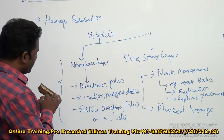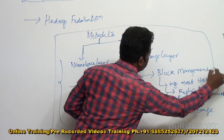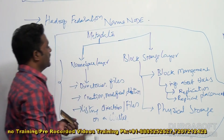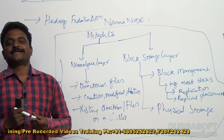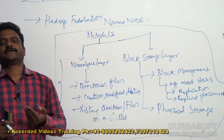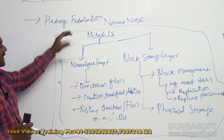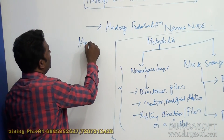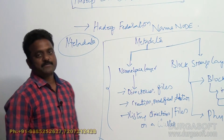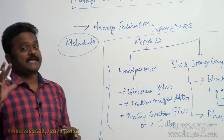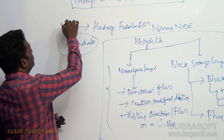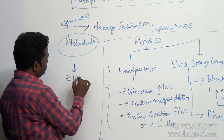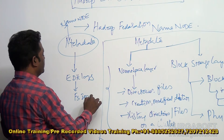This is all inside the metadata of a namenode, covering the 1x version of architecture or any namenode. The different things involved when it comes to metadata include edit logs and the file system image, also called fs image. These are the basic components of metadata.